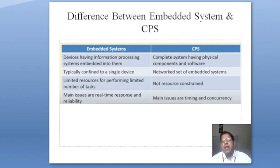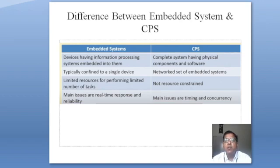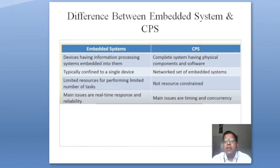Comparing embedded systems with cyber physical systems — in Industry 3.0 there was automation with computers, microcontrollers, and microprocessors, so a lot of development took place in embedded systems. The first difference: in an embedded system, whatever the sensor senses, the data is processed in the microcontroller itself. Whereas in cyber physical systems, the entire data is transferred to the cyber processing through the internet. The second difference: embedded systems are typically confined to a single device — a single sensor senses data and processing happens in the controller itself. Whereas in cyber physical systems, n number of sensors simultaneously pick up data and that data is transferred to the cyber servers and cloud servers for processing.